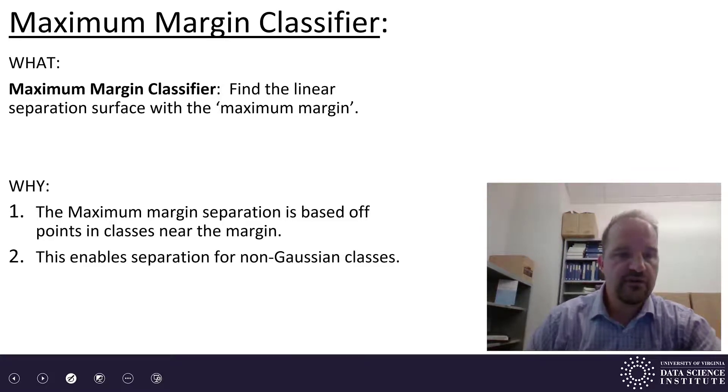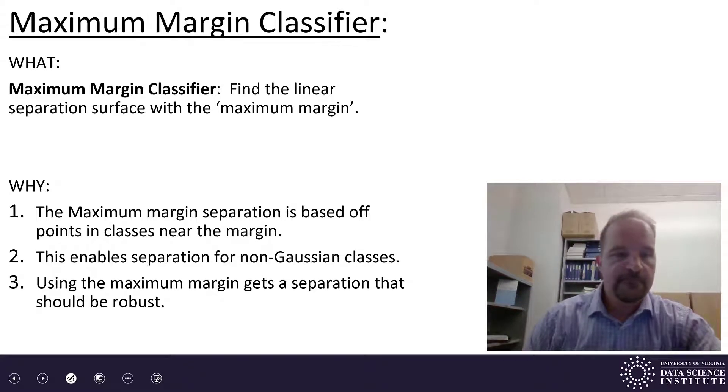What does this do? This creates separation for non-Gaussian classes. LDA and QDA are really good when you have Gaussian classes. But if they're not Gaussian, those methods aren't going to work very well or might not work very well. And so maximum margin classifier works well for non-Gaussian classes.